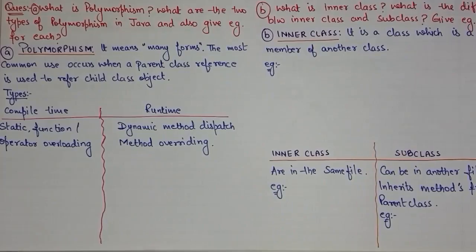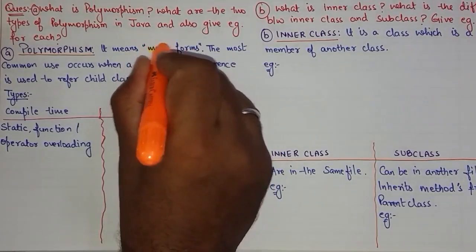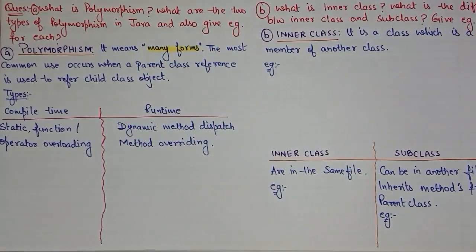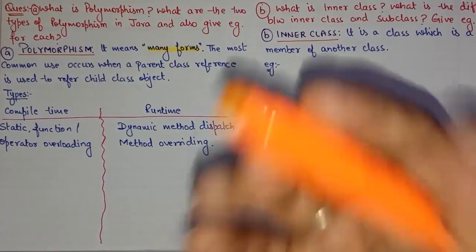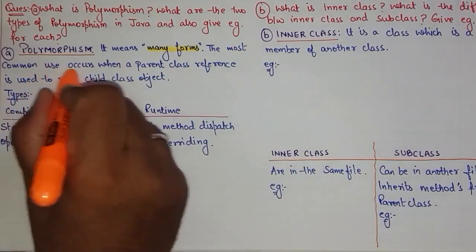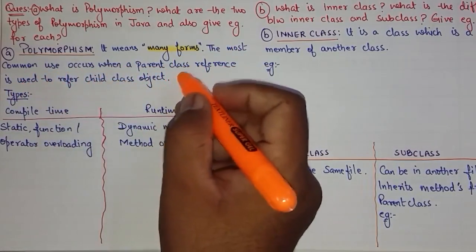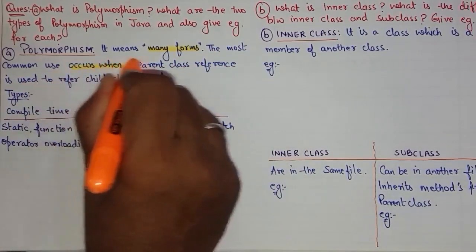Question number 1: What is polymorphism, and what are the two different types of polymorphism in Java? Give an example for each. Polymorphism means one name, many functions — all different forms of one thing. So it means many forms. The most common use occurs when a parent class reference is used to refer to a child class object. This is an example of polymorphism.